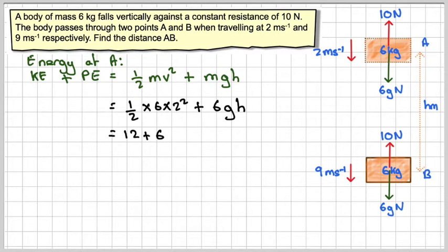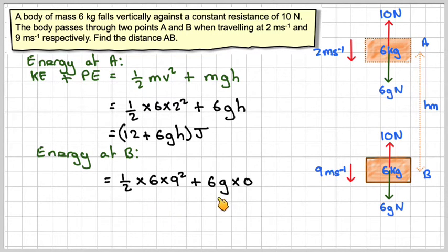And now we'll consider the energy at B. So the energy at B will be half mv squared, which is half times 6 times 9 squared, and the potential energy will actually be zero. So we're going to get 243 joules when we work that out. So there will be some sort of energy loss between here and here.